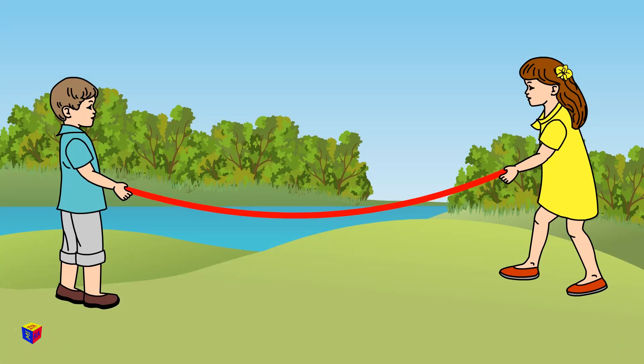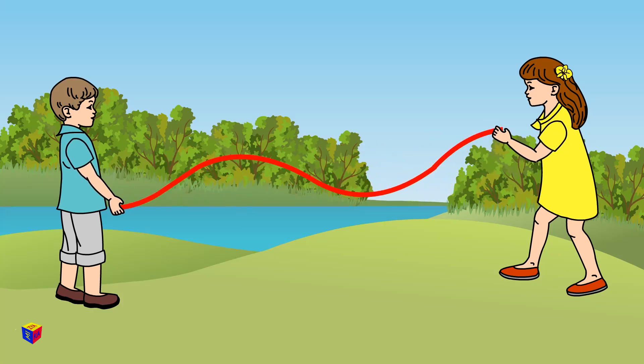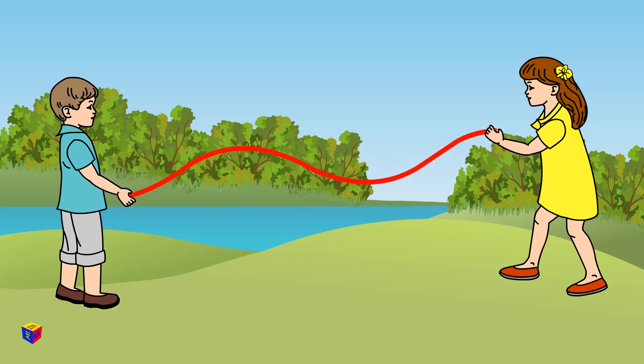And now only one participant in the experiment should raise and lower the end of the rope. The second participant simply holds the rope. Look! We've just created a wave!